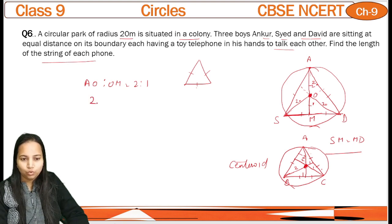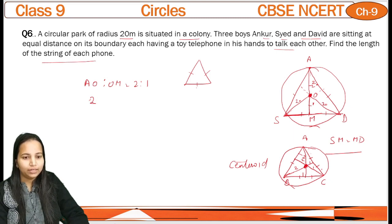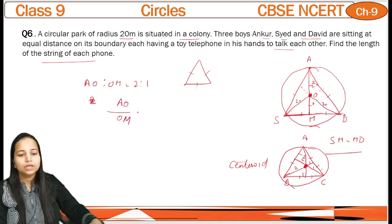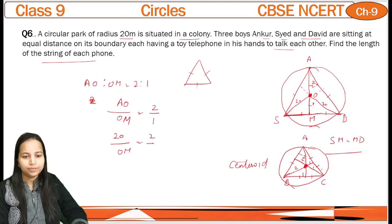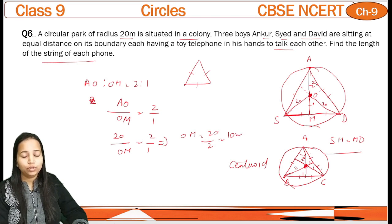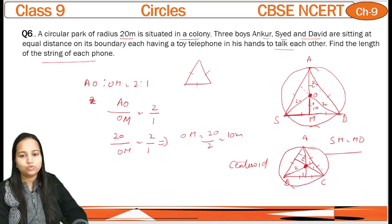Hamare is question mein bhi yeh O centroid hai, aur OM yahan pe height SD ki upar hai. To centroid isko 2:1 ki ratio mein divide karta hai. So AO upon OM is equal to 2 by 1. AO is 20 kyunki yeh radius hai, OM humein pata nahin. So OM kitna ho jayega? It's 20 by 2, that is 10. To OM ki value 10 aati hai.